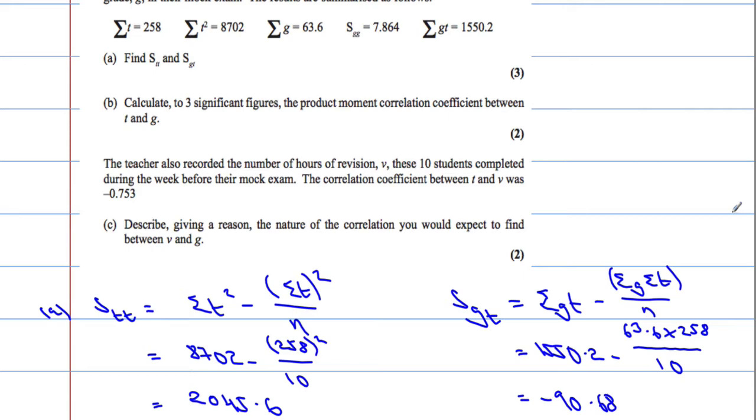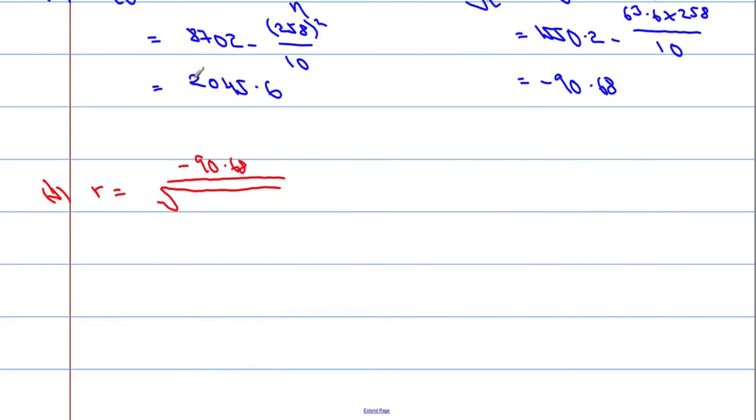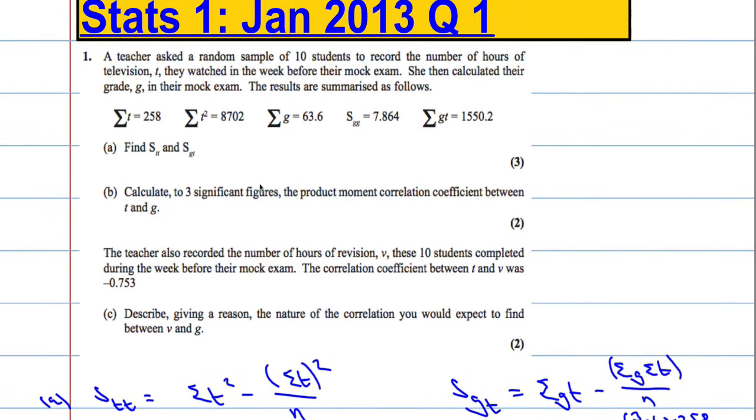Okay, and the next part is to calculate to 3 significant figures the product moment correlation coefficient between T and G. So part B, R is going to equal S_GT, so negative 90.68, all divided by the square root of 2045.6 times by 7.864, so we're going to whack that into the calculator now.